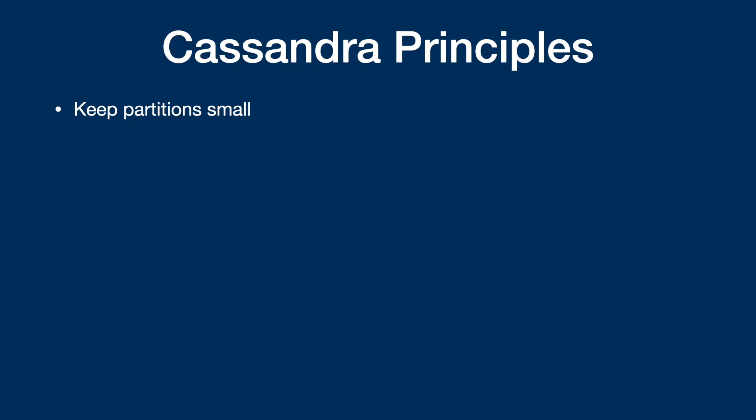First, we're going to look at some common Cassandra design principles. I went through all of these in two other videos on the channel, so I would recommend checking those out before coming to this one. The first principle is to keep your partitions small. Cassandra stores data in partitions, and it depends on your schema how Cassandra writes to different partitions. So during design time you want to make sure that your partitions are small.